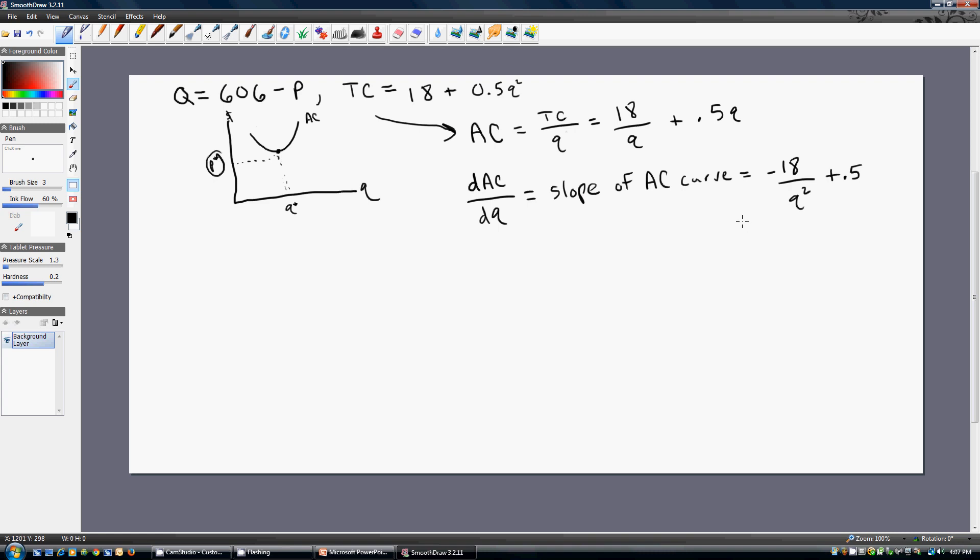This equation is the slope of the average cost curve. We're interested in finding where the slope equals zero. So I'm going to set this derivative result equal to zero and solve for q.